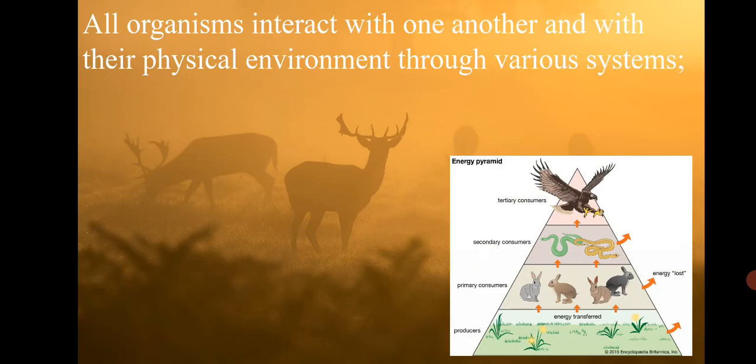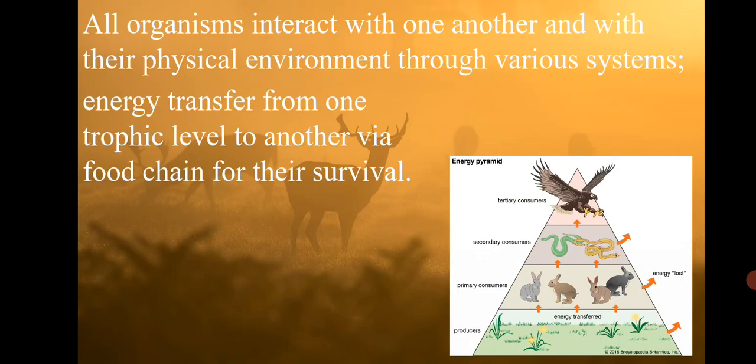All organisms interact with each other and with their physical environment. They transfer energy across different trophic levels by a food chain. You can see the energy pyramid — plants capture energy from light, then plants are consumed by primary consumers, primary consumers are consumed by secondary consumers, and so on.